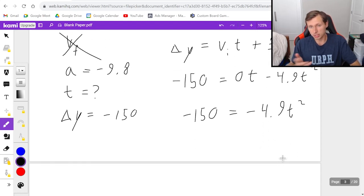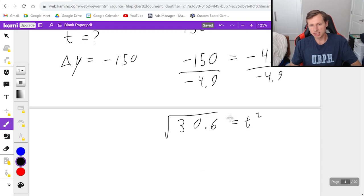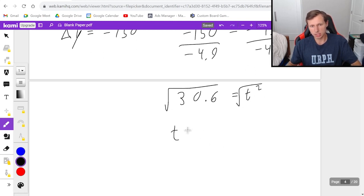Now in order to solve for t, I'm just going to divide both sides by negative 4.9. Let's see what we get there. Looks like I got 30.6 is equal to t squared. And then if I want to find the time, I just got to take the square root. So t is equal to 5.53 seconds.